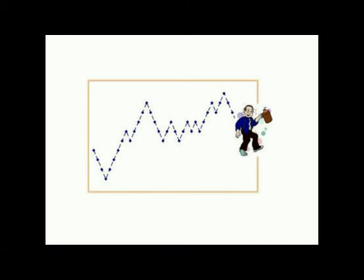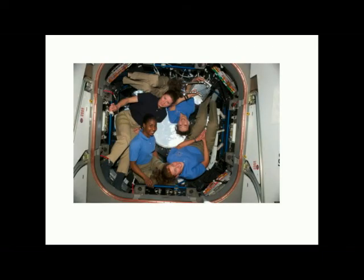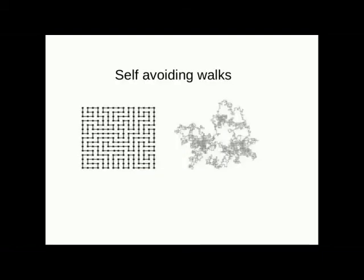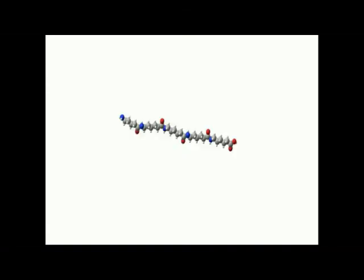However, unlike ordinary random walks, we need to take into account the fact that two monomers cannot occupy the same space at the same time, the so-called excluded volume. That's what we see in snake. These special random walks are known as self-avoiding walks and were introduced by Werner Kuhn to represent chain-like entities, such as polymers.